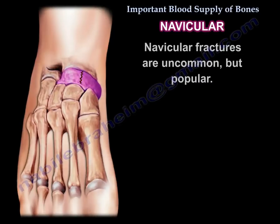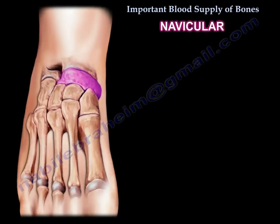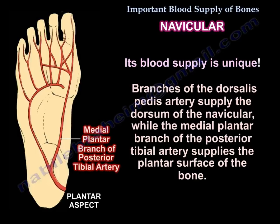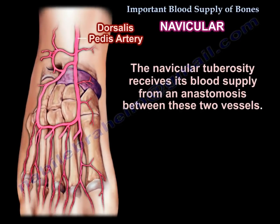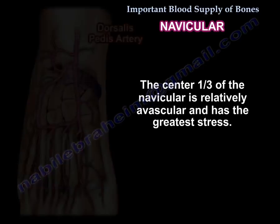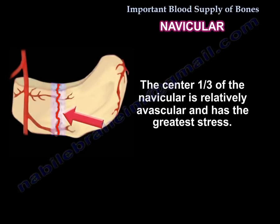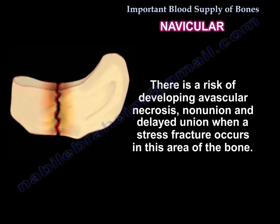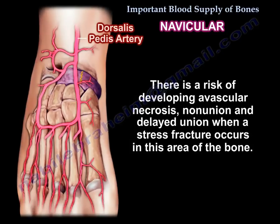Navicular fractures are uncommon but important. Its blood supply is unique: branches of the dorsalis pedis artery supply the dorsum, while the medial plantar branch of the posterior tibial artery supplies the plantar surface. The navicular tuberosity receives blood supply from anastomoses between these two vessels. The area where a stress fracture may occur — the central third of the navicular — is relatively avascular and has the greatest stress, creating a risk of avascular necrosis, non-union, and delayed union.